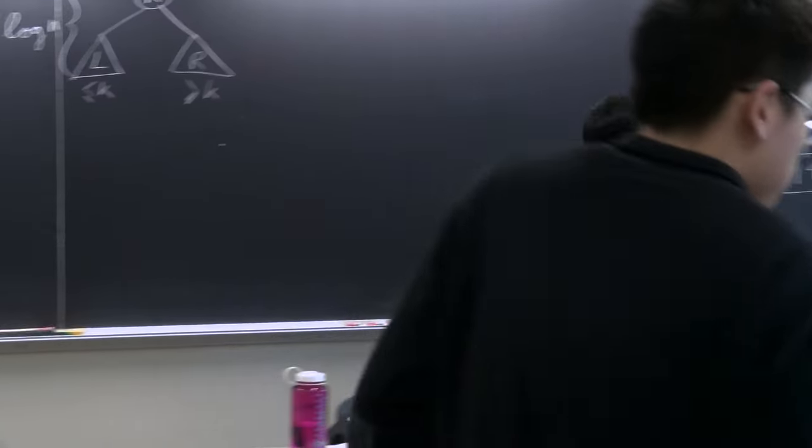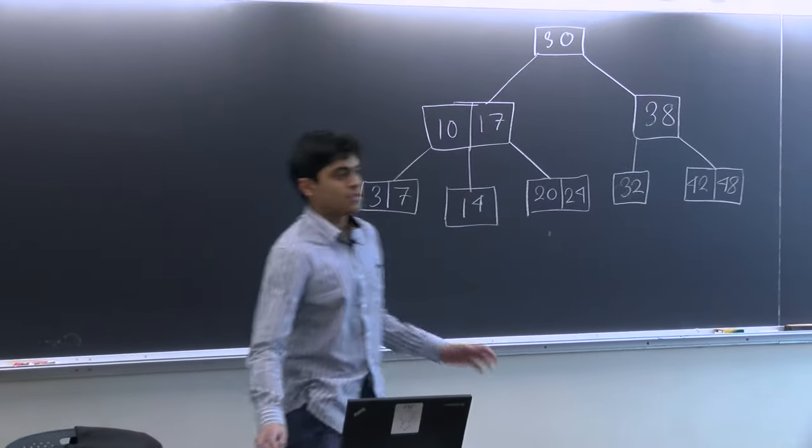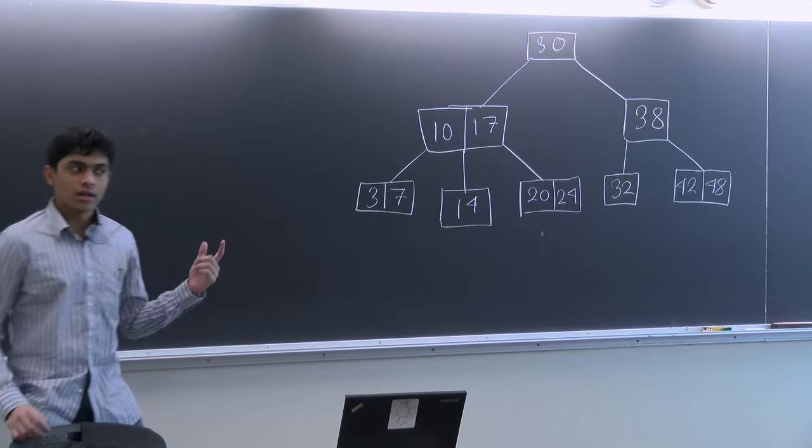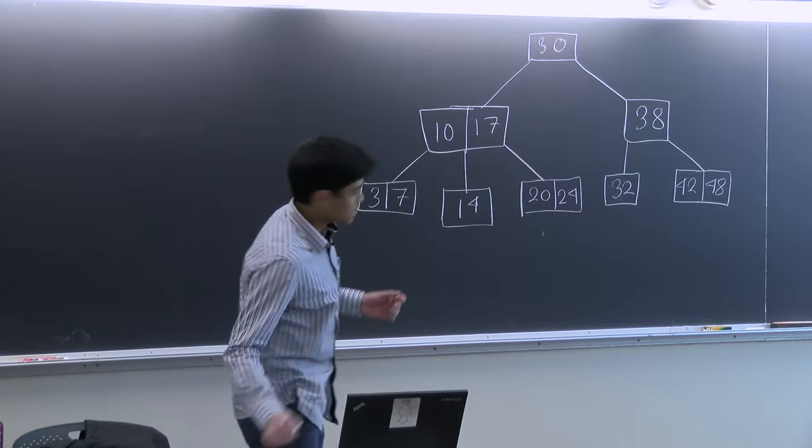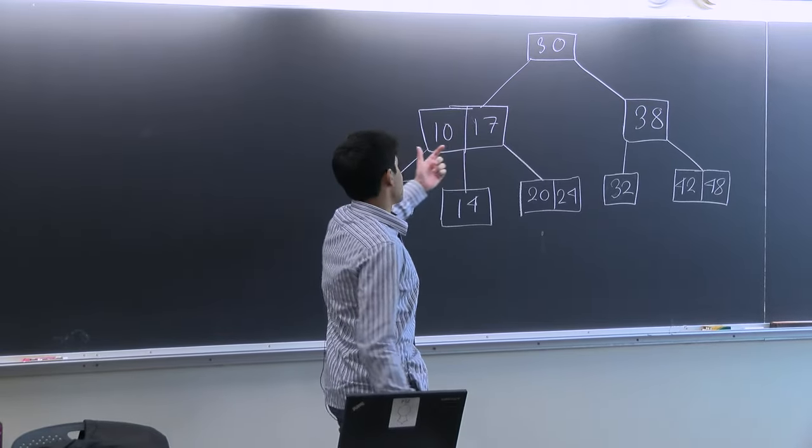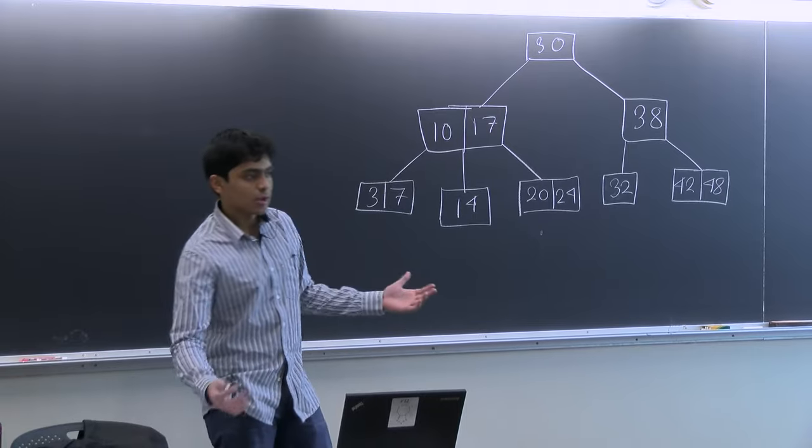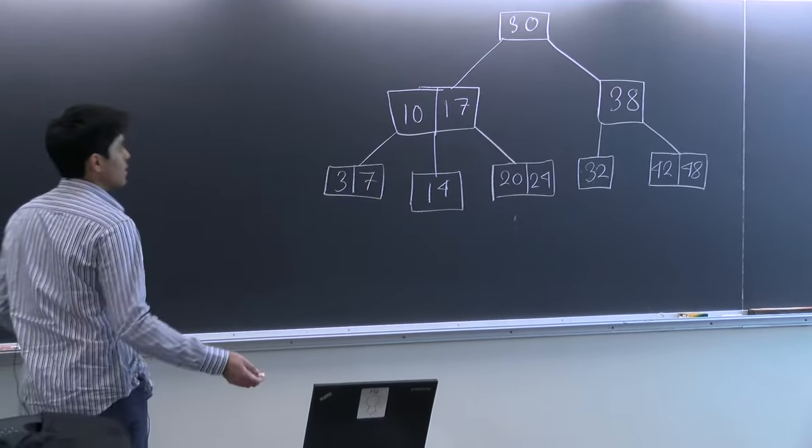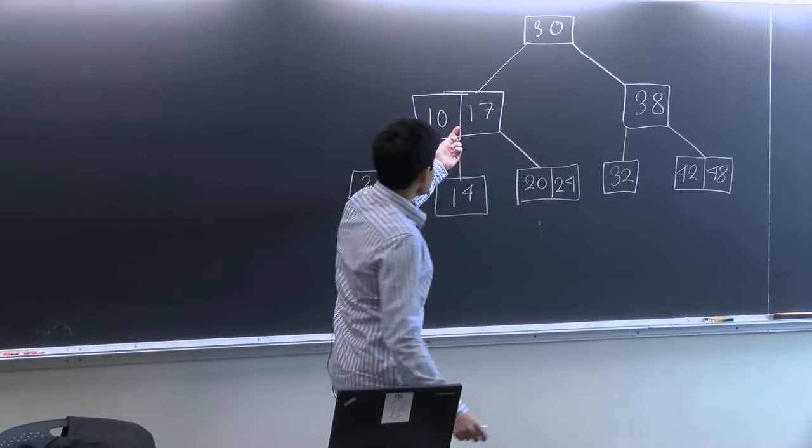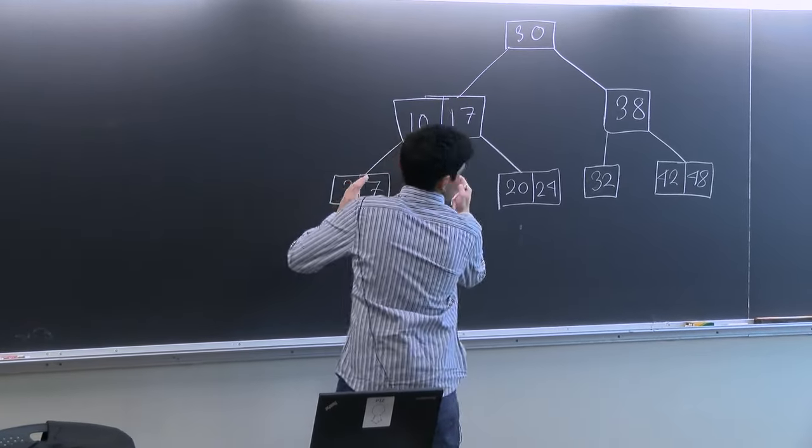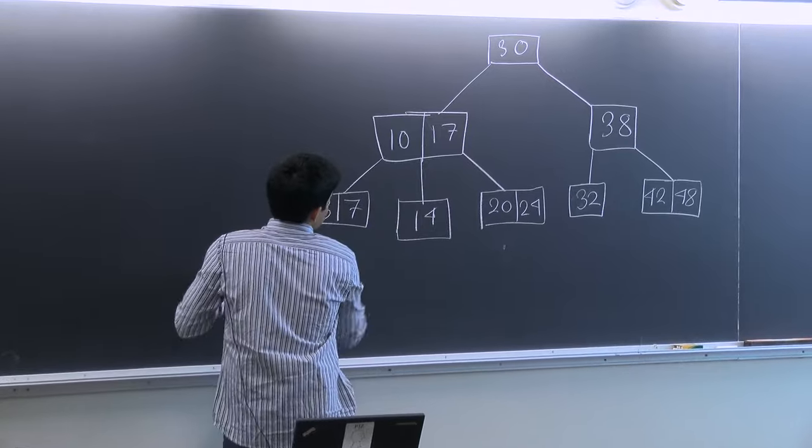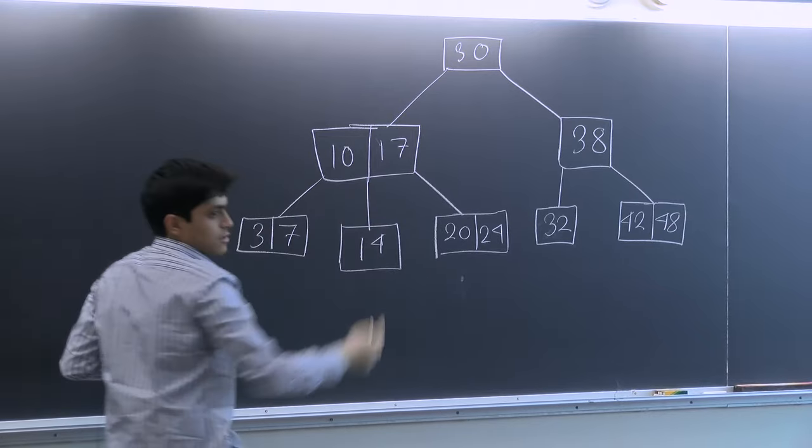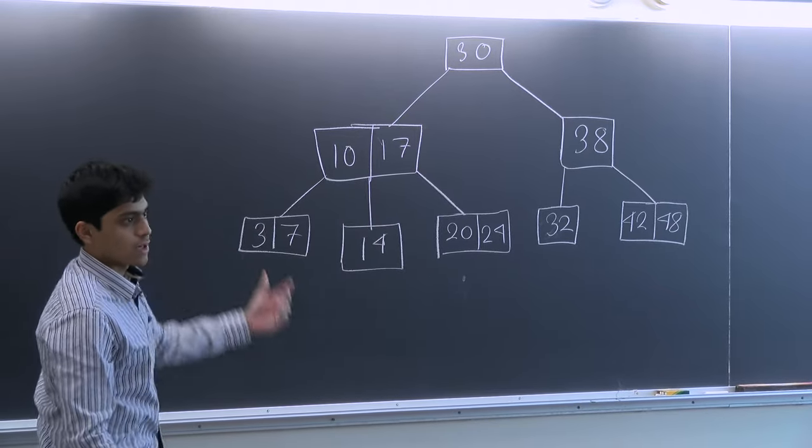So this is a 2-3 tree. As you can see, every node has either two children or three children. Every node can have either one key or two keys. The correlation is that if there are n keys in a node, it has n plus one children. So if you have a value here, the two children surrounding it, this side is less, this side is more. So it's essentially in order reversal. So left child, root, right child.